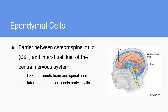Moving on, we have ependymal cells, which are the barrier between cerebrospinal fluid and interstitial fluid in the central nervous system. Cerebrospinal fluid surrounds the brain and the spinal cord, and it's responsible for cushioning the brain from injury, delivering nutrients, and removing waste. Interstitial fluid, on the other hand, surrounds the body's cells. Ependymal cells serve as the barrier between the cerebrospinal fluid and the interstitial fluid.